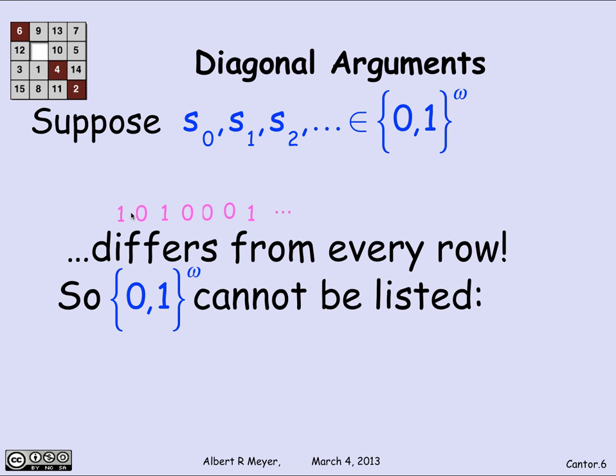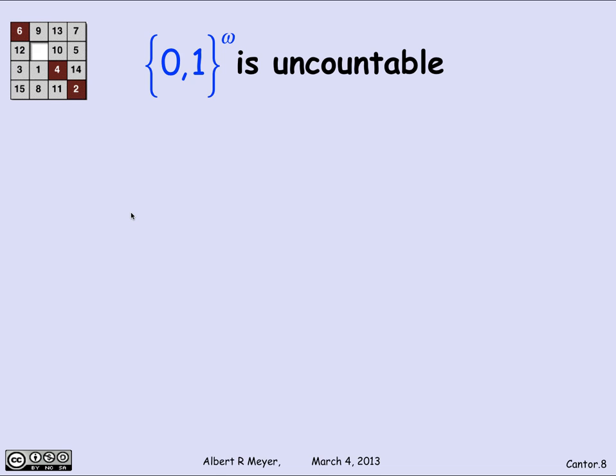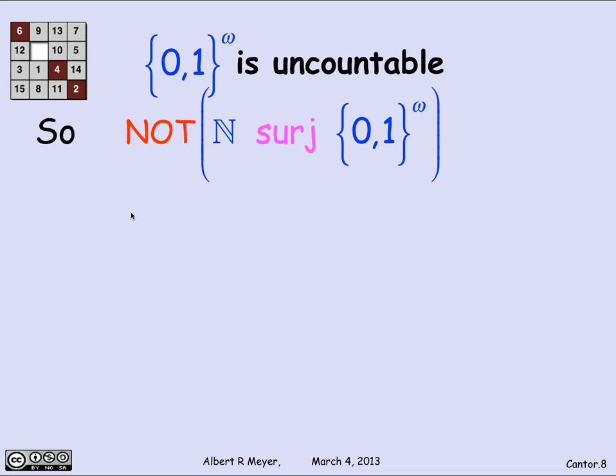This diagonal sequence differs from every row: it differs from the third row in the third position, the 15th row in the 15th position, and for every row it differs somewhere. It's not in the list. That means {0,1}^ω can't be listed this way because anything I list will be missing this diagonal sequence. We can conclude that the infinite binary sequences are uncountable — because if you give me some list, I've shown how to find something missing, namely the diagonal sequence. This proves that the mapping S₀, S₁, S₂, ... from the non-negative integers to indexed sequences cannot be a surjection.